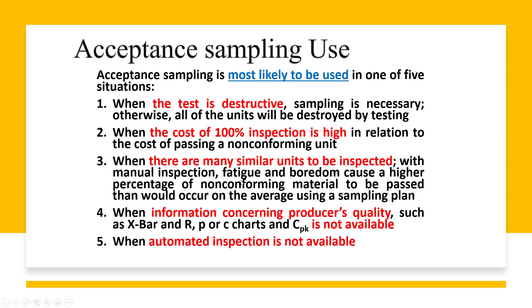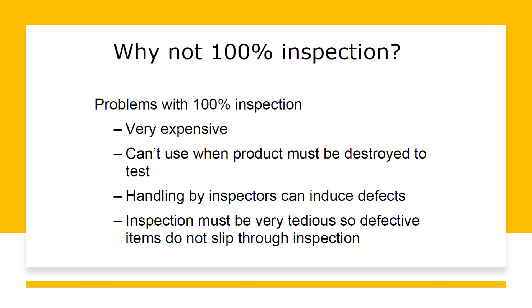Fifth, with manual inspection, fatigue and boredom cause a higher percentage of non-conforming material to pass than would occur on average using sampling. Also, when information from producer quality charts such as X-bar, R, p, and c charts is not available, you can use acceptance sampling — since acceptance sampling does not require as much data as those control charts do. Additionally, when automated inspection is not available.